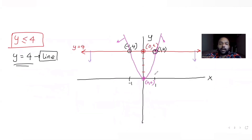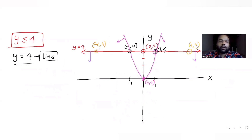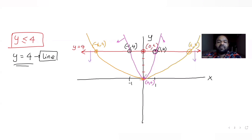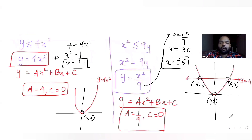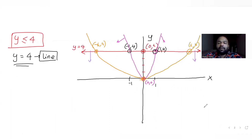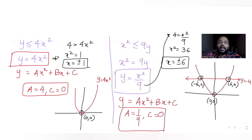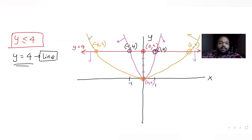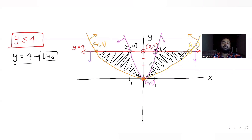Drawing this wider parabola through the origin with intersection points at (6, 4) and (−6, 4). Since the condition is x² ≤ 9y, meaning y ≥ x²/9, the region is above this parabola. The common region enclosed between all three curves is the area between the two parabolas, bounded above by y = 4.